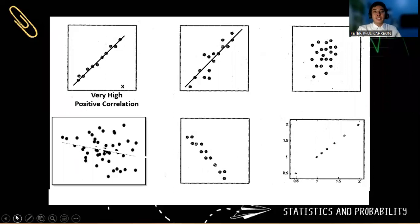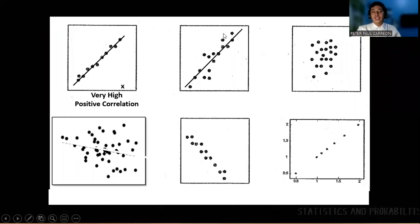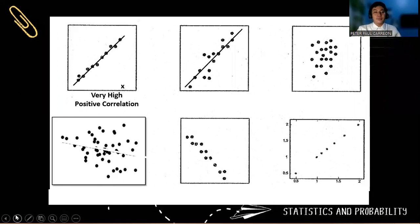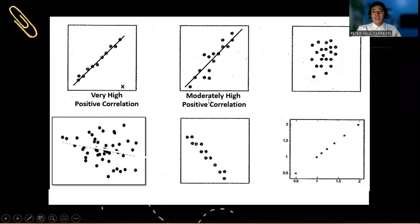The next example, so I draw the trend line nearest to this point. So this is considered moderately high positive correlation. So again, the direction is positive and the strength is moderately high.